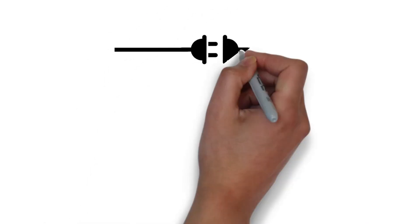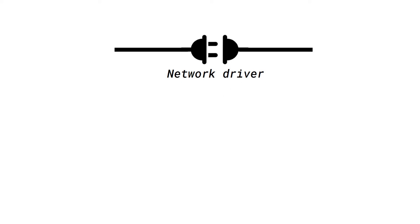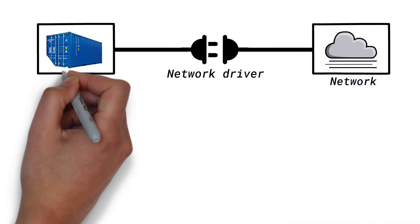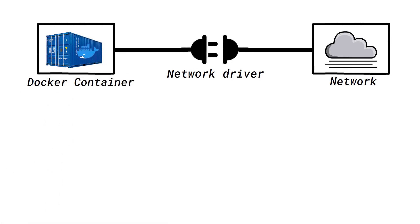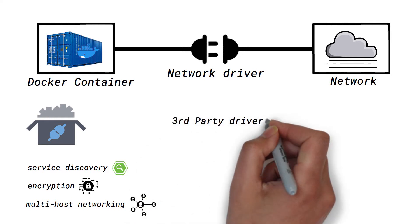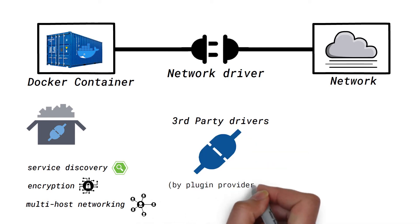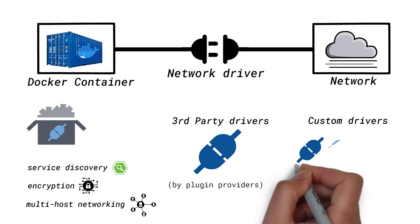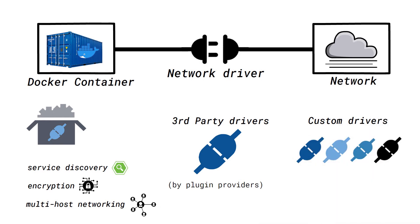Network drivers are pluggable interfaces that provide the actual network implementations for Docker containers. Docker comes with several out-of-the-box drivers that provide the core networking functionality for many use cases like service discovery, encryption, multi-host networking, etc. Then there are third-party drivers developed by plugin providers which are available for special use cases. Lastly, one can even build their own custom drivers if available ones don't suffice, although that will rarely ever be required.